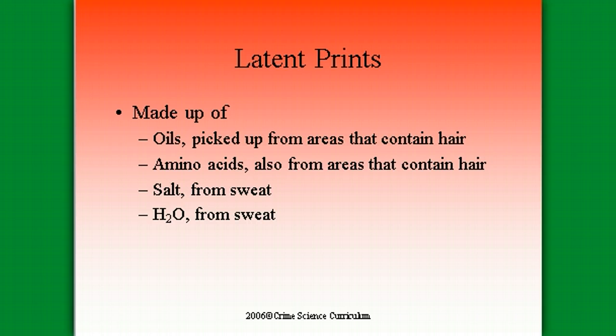The latent prints are made up of the oils that are picked up from the areas that contain hair on the body. They're also made up of amino acids, also from areas that contain hair, salt from your sweat, and water from your sweat. What we can do with latent prints in order to find them at a crime scene involves things that react with what the fingerprint leaves behind.